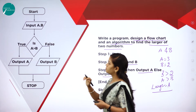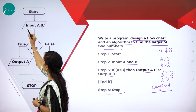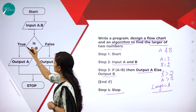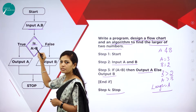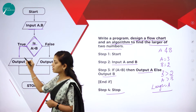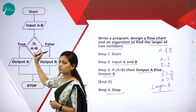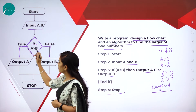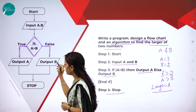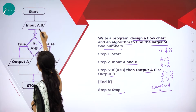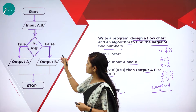Now, how to write the flowchart for this algorithm? Start of the program is represented inside an oval shape. Then input values A and B are shown. In the decision diamond, write the logic: is A greater than B? If true, print output A. If false, print output B. Then end of the program. Don't forget to mention the flow of data with arrows. This is one simple flowchart for the largest of two numbers.